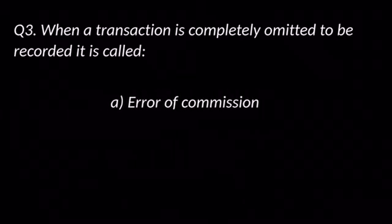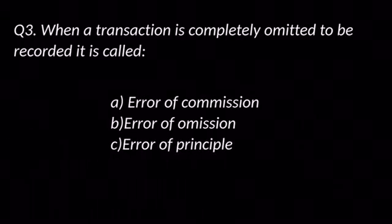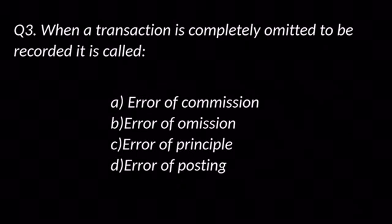Question number three: When a transaction is completely omitted to be recorded, it is called — options are: A. Error of commission, B. Error of omission, C. Error of principle, and D. Error of posting. The answer is B: Error of omission.